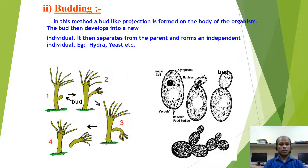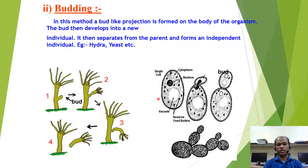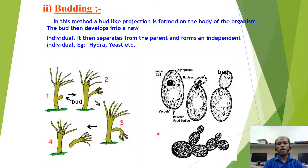In the budding method, a bud-like projection is formed from the body of the organism, and this bud then develops into a new individual. Budding takes place in yeast, which is a unicellular fungus, and also in Hydra. As you can see in the picture, a bud-like structure grows and ultimately detaches from the parent body and lives its own life.